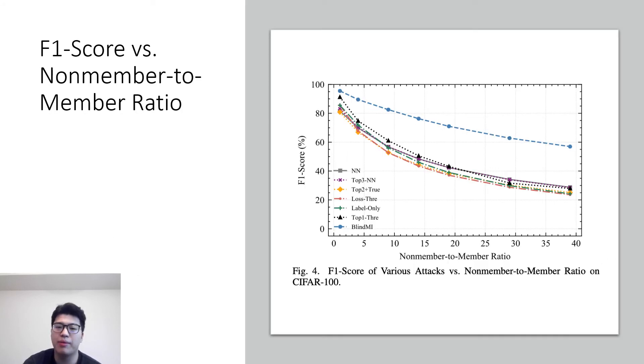We adjust the non-member to member ratio and measure the F1 score. The underlying rationale behind the introduction of ratio is that a practical targeted set usually has a small number of members and a large number of non-members. This observation shows the practicality of BlindMI in real-world settings. All other attacks in the literature drop as the ratio increases, while the performance decrease of BlindMI is stable. That is, the performance of existing membership inference attacks drops below 50% when the ratio is larger than 10, while the performance of BlindMI is still above 50%, which is 35% higher than the state-of-the-art when the ratio equals 39.